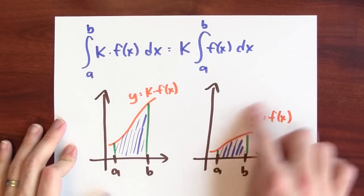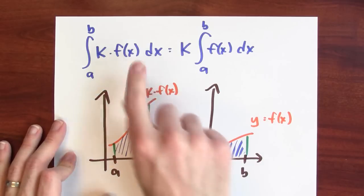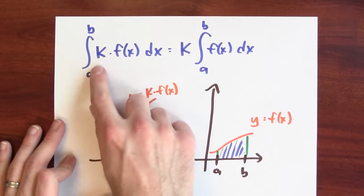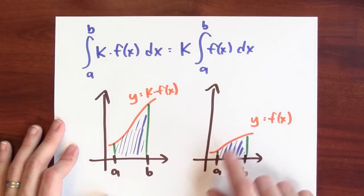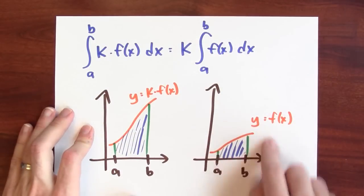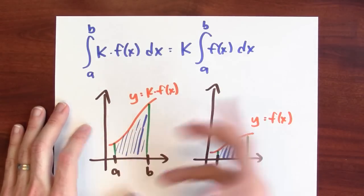Here's two pictures. Here's the graph of y equals f of x, and here's the graph of y equals k times f of x. This thing here calculates this area, the area under the graph of k times f of x, and it's k times just the area under the graph of f of x. And that makes sense, because if you take this graph and you stretch it k times, that multiplies the area by a factor of k.